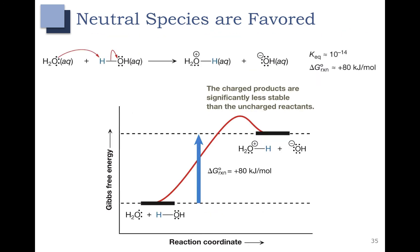Now what about that first slide we looked at at the beginning of the lecture? We can look at this reaction and recognize that the delta G naught of the reaction is positive — this reaction is going uphill and will require energy to happen. The charged products are less stable than the reactants, so this reaction is not favored. That means the neutral species, or the reactants, are significantly preferred over the charged species. This concludes our brief overview of thermodynamics, kinetics, and reaction coordinate diagrams.